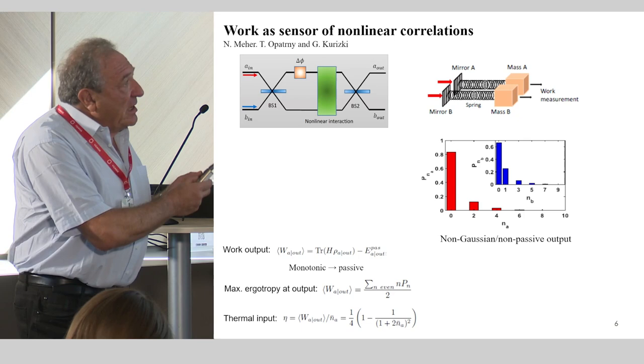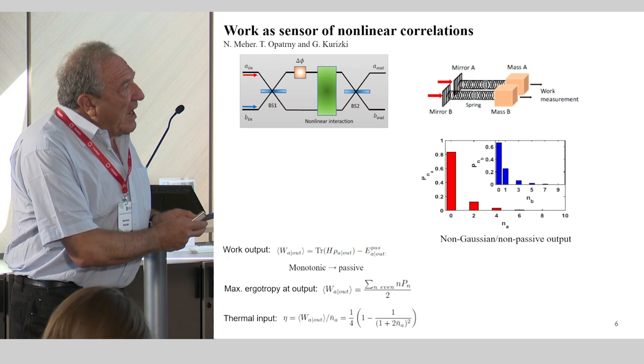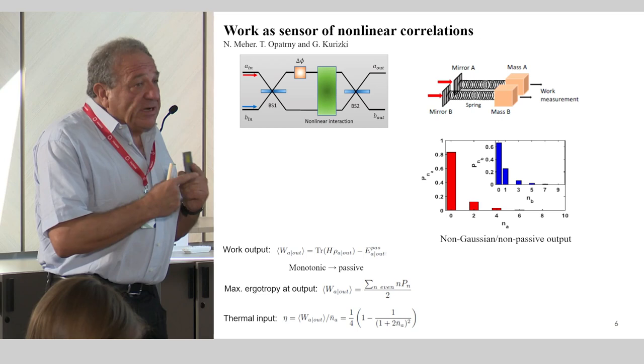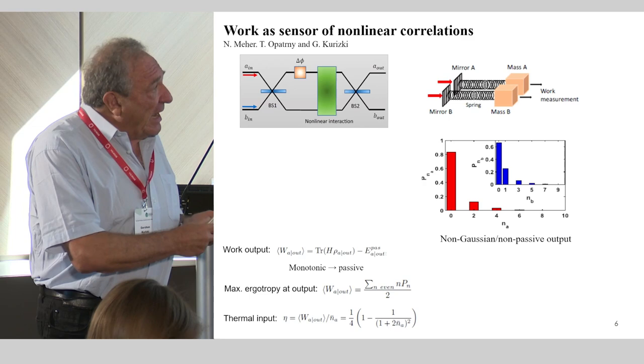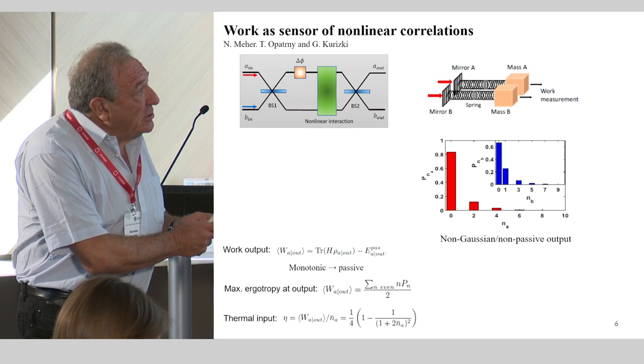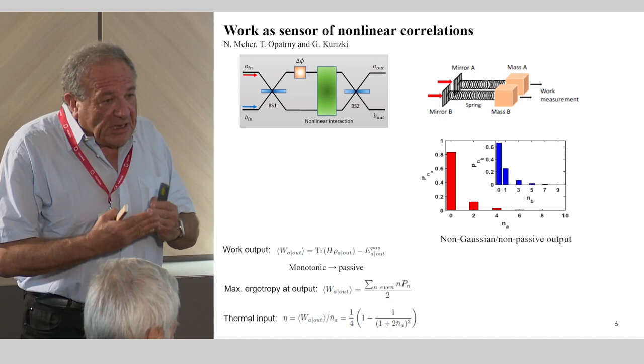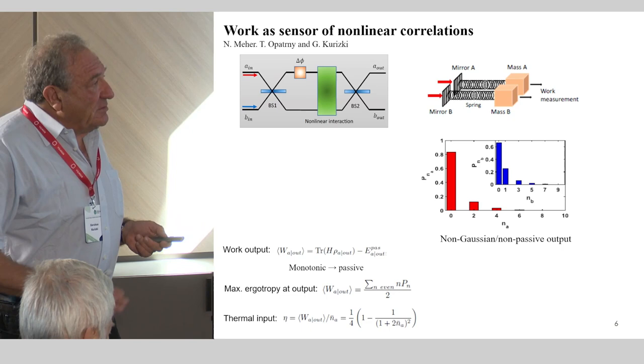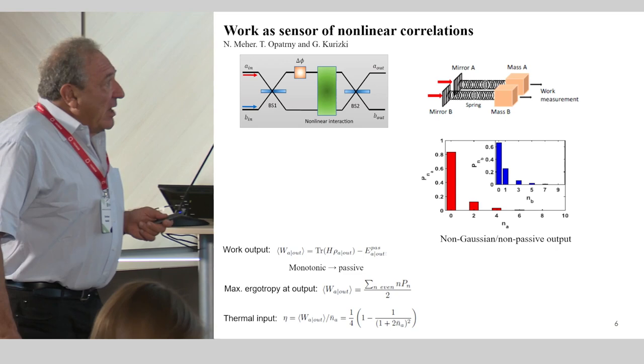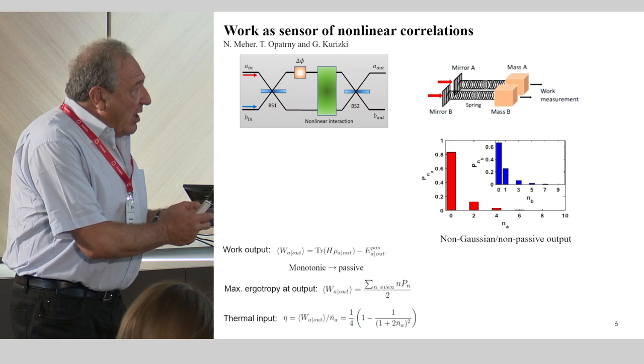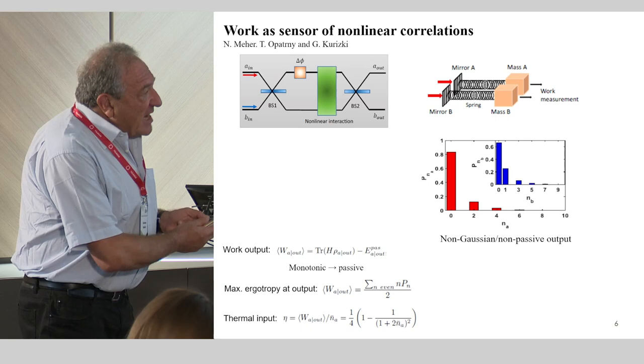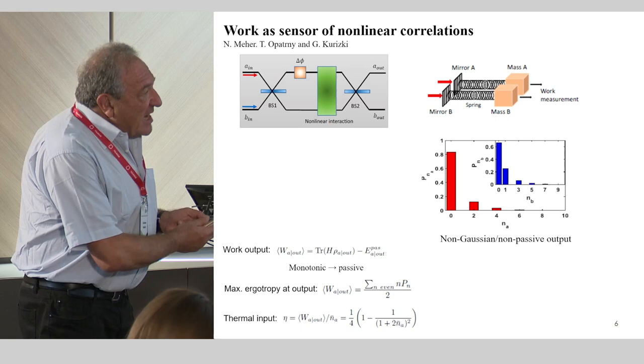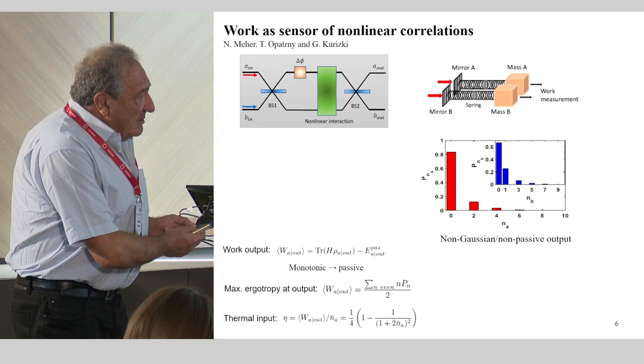This mode, the hotter mode at the input, acquires a property whereby the odd photon numbers are missing if the nonlinear interaction is chosen to be pi. So you observe that there are only even numbers, and the colder mode correspondingly acquires strong preponderance for odd numbers. There is a strong connection between the nonlinearity and the selective discrimination of photon numbers. If you now calculate the work which is associated with this output, you see that at this point of pi phase shift, pi nonlinear phase shift, you have basically a sum only over the even numbers. This is the result of this non-monotonicity of the output.